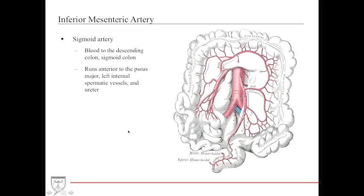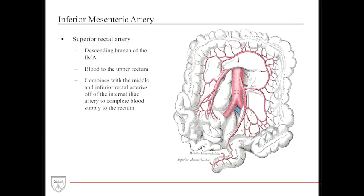The sigmoid artery provides direct blood to the descending colon and sigmoid colon, running anterior to the psoas major, left internal spermatic vessels, and ureter — and can sometimes be injured during open surgeries for ureteric procedures. The last segment is the superior rectal artery, a descending branch providing blood to the upper rectum. It forms an important portal-caval anastomosis with the middle and inferior rectal arteries, which come off of the internal iliac, a branch of the common iliac.